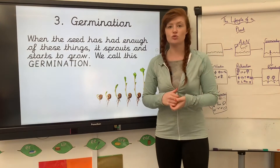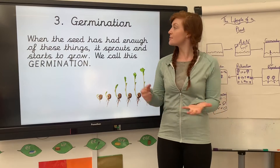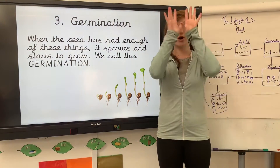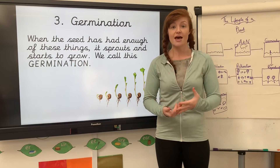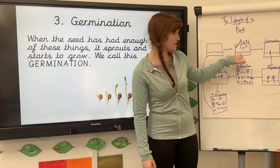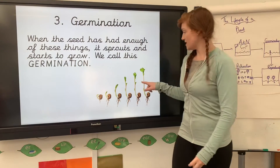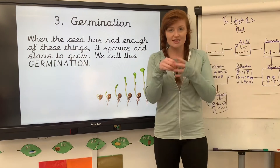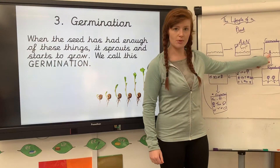The next phase is called germination. This is when the seed gets the sunshine, the water, the air, the nutrients — it has all of those things in abundance and therefore starts to grow. You can see on my picture here it's gone from the seeds to sprouting up. So instead of just having that seed in the ground growing the roots, it starts to sprout up above the mud.